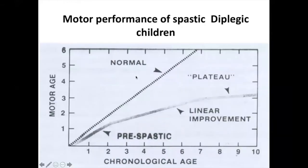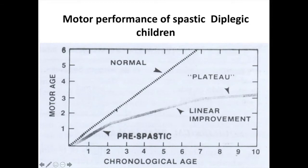Here is a graph showing motor performance of spastic diplegic children from age zero to seven years. The normal child progressively improves posture, gait, and walking pattern — called linear improvement. A cerebral palsy patient may show some improvement after two years; if there is good improvement by two years, he will progress well.